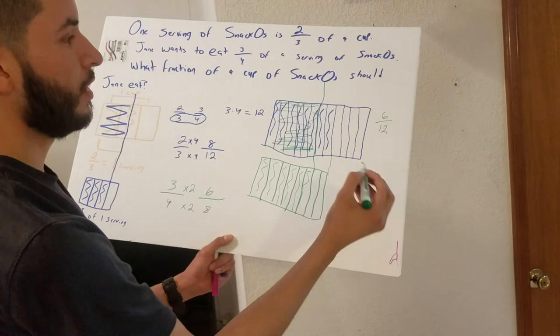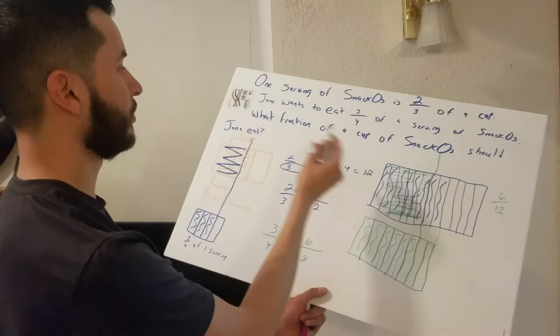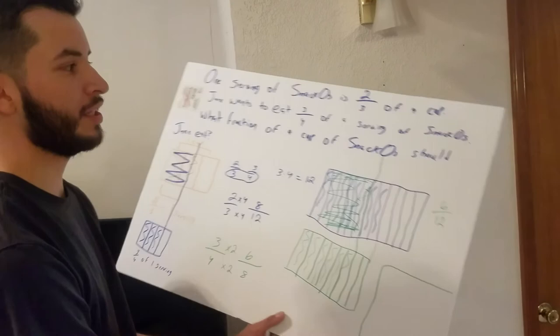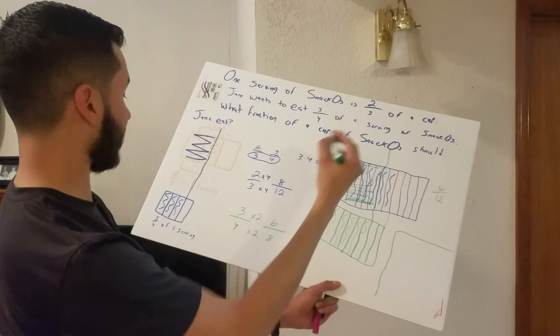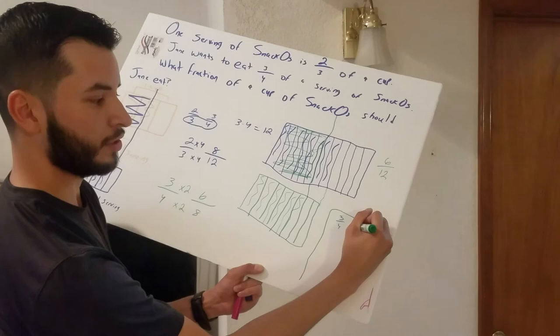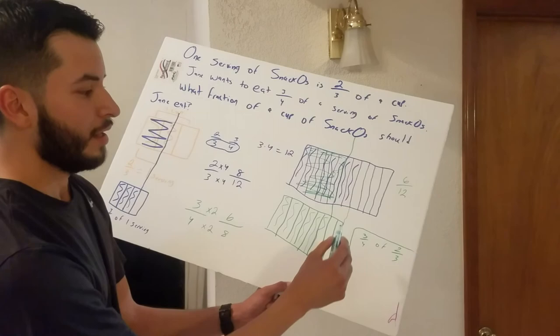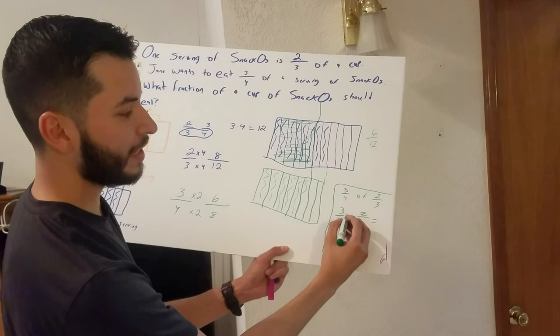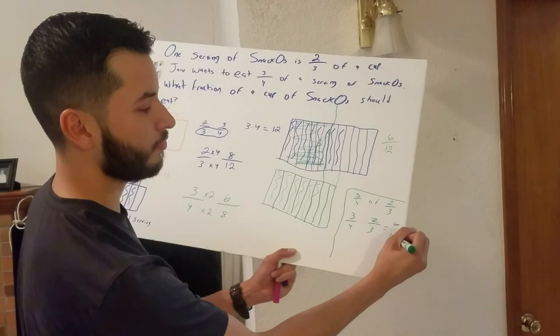So we know that 6 twelfths of a cup of snackos is what Jane should eat. We can go ahead and check that by multiplying the two fractions. This question is asking what is three-fourths of two-thirds. Since one serving is two-thirds, and when a fraction is 'of' something it indicates multiplication, we do 3 over 4 times 2 over 3. For fractions you just multiply straight across: 3 times 2 is 6, 4 times 3 is 12, giving us 6 over 12. This confirms our answer is correct.